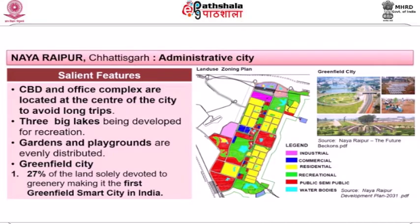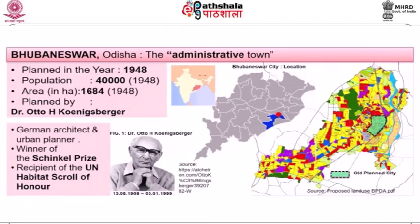From the map, you can see how the city was planned as a gridiron pattern and how land uses were located — for example, the CBD and office complex were located at the center of the city to avoid long trips. There were three big lakes planned for recreation, and evenly distributed gardens and playgrounds. Naya Raipur was a greenfield city, with 27 percent of the land devoted to greenery, qualifying it to become the first greenfield smart city in India.